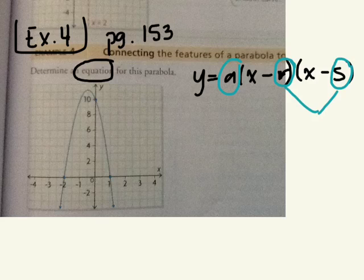Just by looking at the graph, do you know the r and the s? What do r and s represent? The x-intercepts or the zeros, good. So what are the two x-intercepts of this relation? Negative 2 and positive 1.